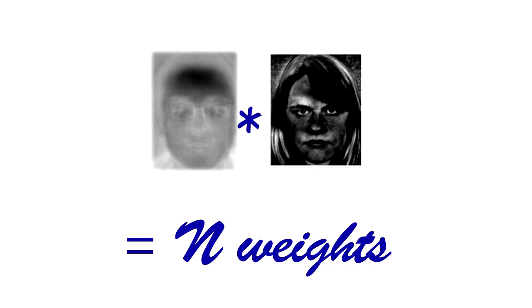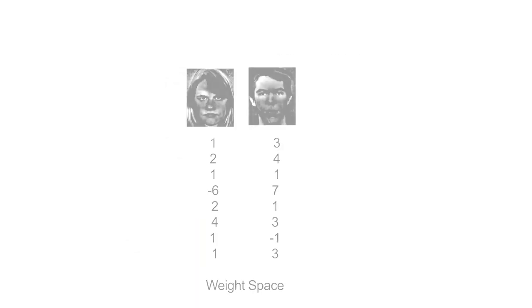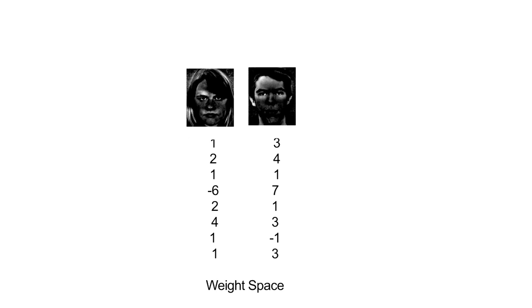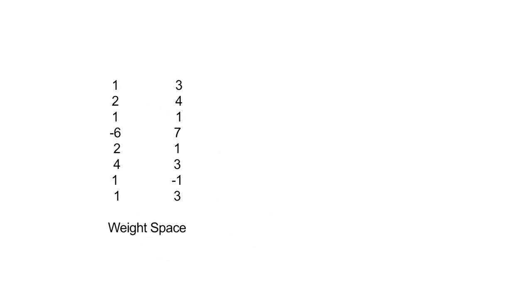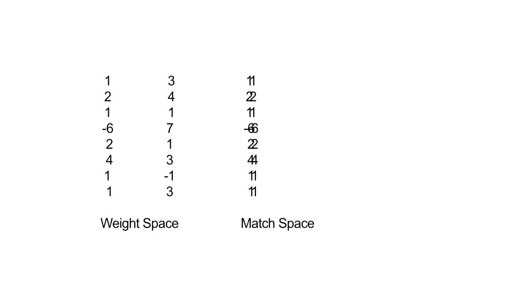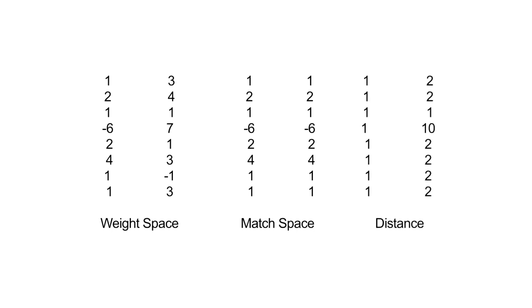In order to classify if something is a match, the last complex step comes into play. We need to compare the projection of the database faces with the projection of the matching face. We do the same steps as with the matching face but with each of the database images, and store each column vector of weights into a matrix called weight space. To find a match, we look at the Euclidean distance between each weight. We copy the match face weights into a matrix of the same dimension as weight space, then point by point find the distance squared. The total distance is given by the sum along the columns. In reality, the actual distance is the square root of the sum, but the smallest square root is also the smallest squared.